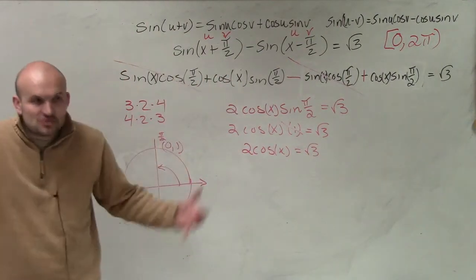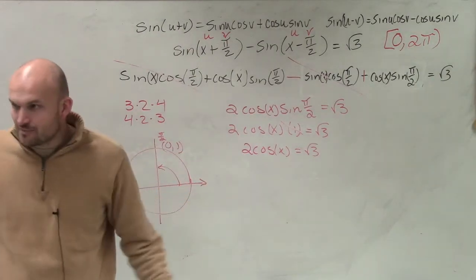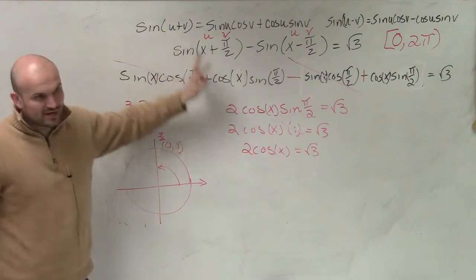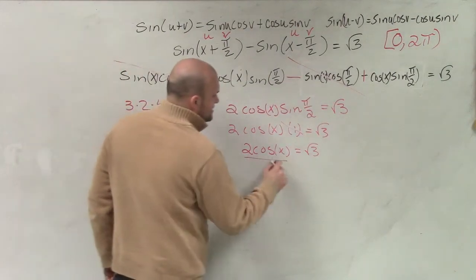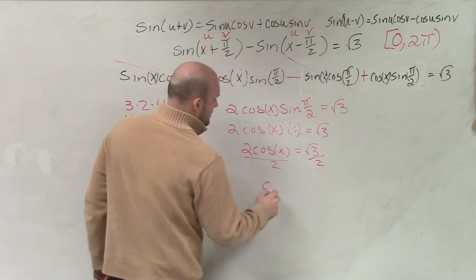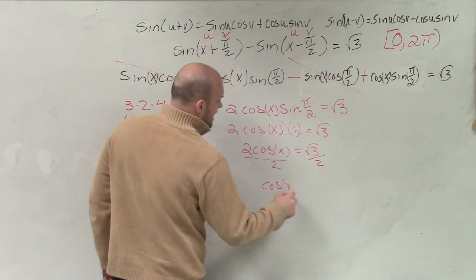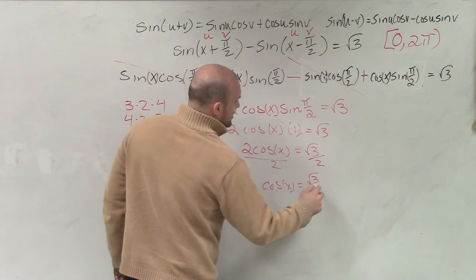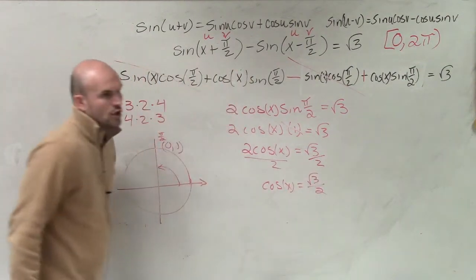Now, again, it says to solve. We need to isolate our variable. We've done a great job bringing this all down to this, but we're almost there. We're at the tail end. So I divide by 2. And what I have is cosine of x equals the square root of 3 over 2.